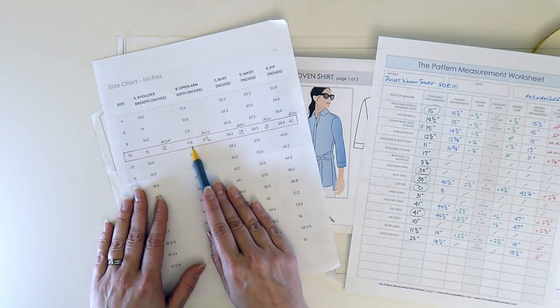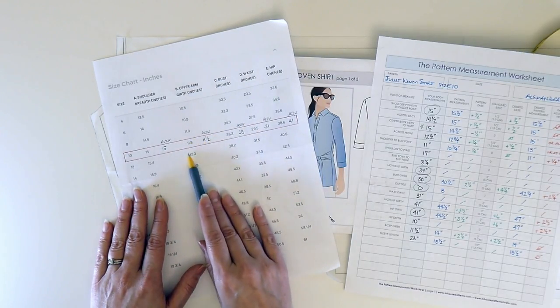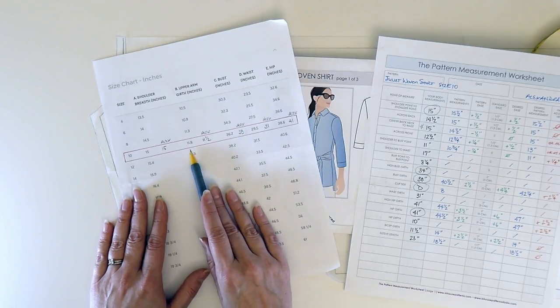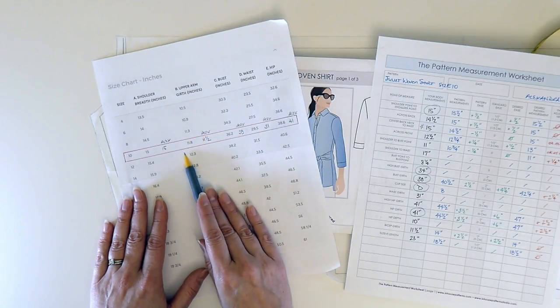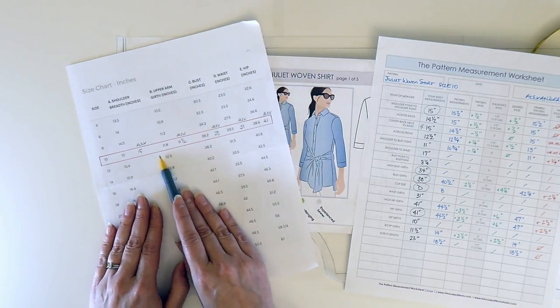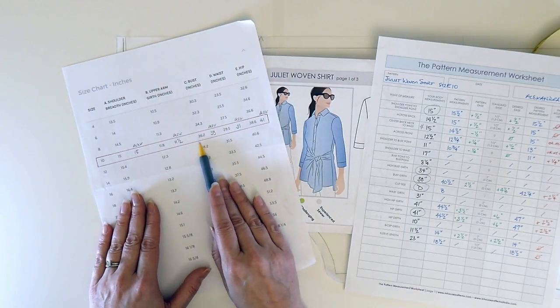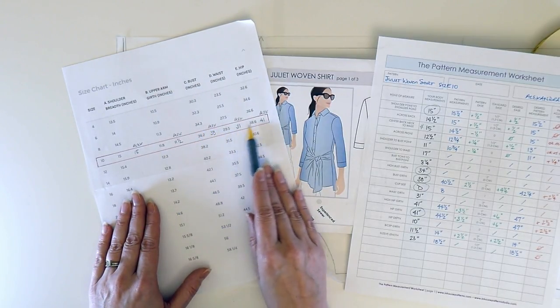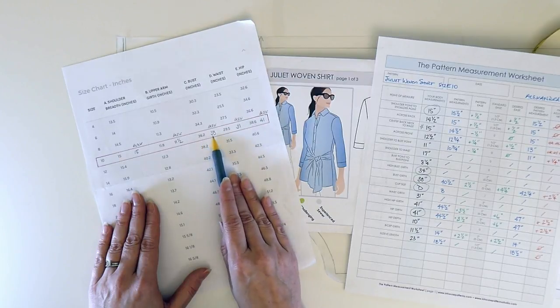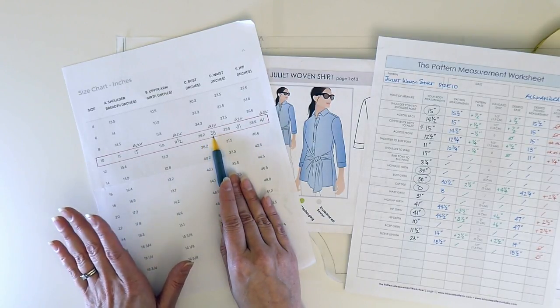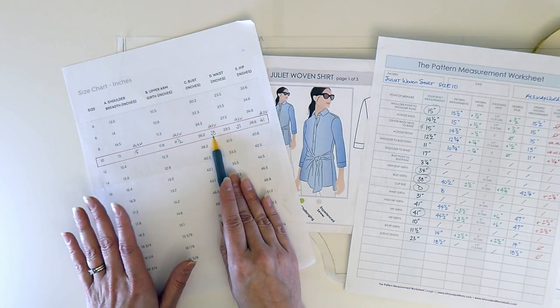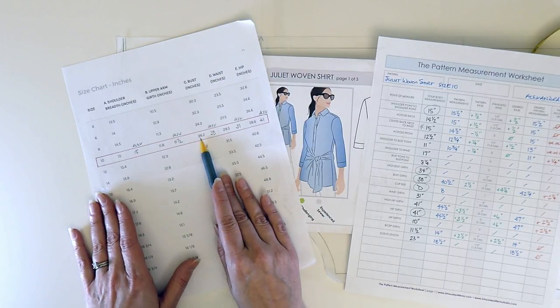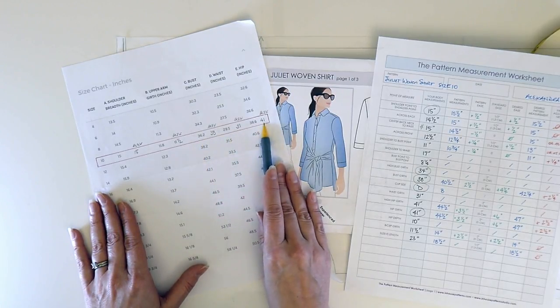If I go along the size chart, I can see here the sleeves are probably going to fit pretty well too. So I know I don't really need to make a big adjustment to the sleeve. But when we get to the bust, waist, and hip, you can see here that I am about two to three inches larger than the size 10 pattern. Right away, this tells me I'm going to need to make adjustments here.